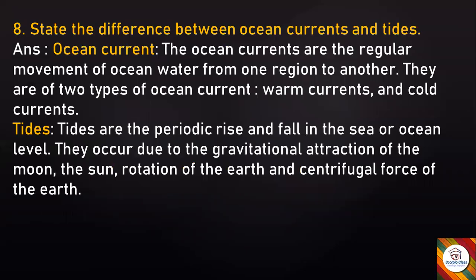State the difference between ocean currents and tides. Ocean currents are the regular movement of ocean water from one region to another. There are two types: warm currents and cold currents. Tides are the periodic rise and fall in the sea or ocean level. They occur due to the gravitational attraction of the moon, the sun, rotation of the earth, and the centrifugal force of the earth.